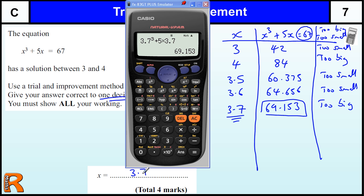Now if I just wrote 3.7 there, I would get one mark. To get the fourth mark, I do need to try one more value between 3.6 and 3.7, and the classic one to try is 3.65, always going halfway.